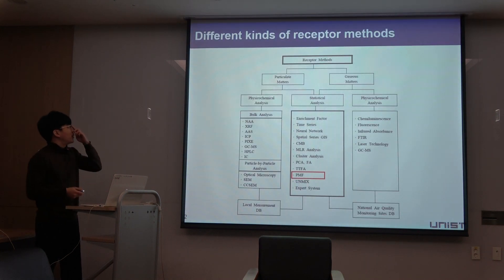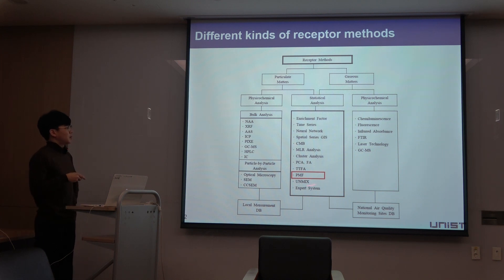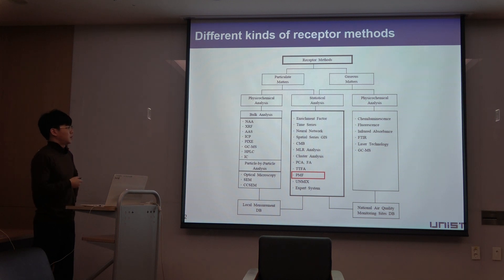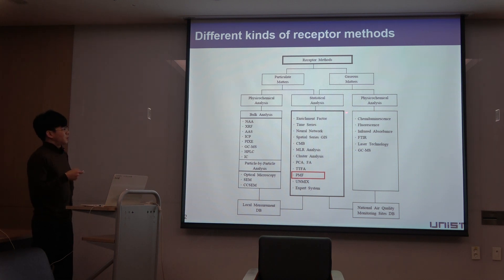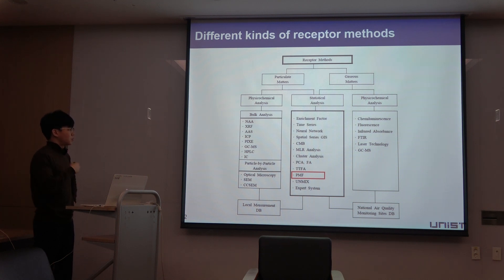There are various types of receptor methods. As a statistical analysis, there is the PMF model. And also, you can see chemical mass balance, the CMB model, and principal component analysis, which is probably familiar to you. As you already know, the difference between CMB and PMF is that if you have a known emission profile, you can use the CMB model. On the other hand, if you have only monitoring data and want to estimate source profile, you can use the PMF model.